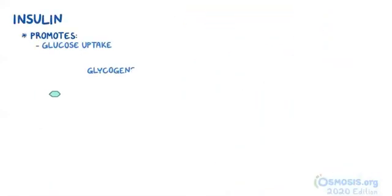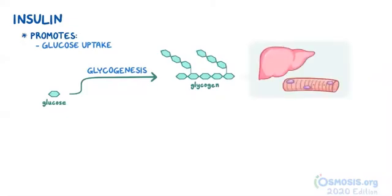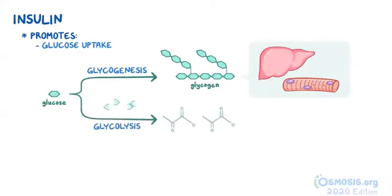As a result, insulin promotes glucose uptake and glycogenesis, which is the conversion of glucose to glycogen. Glycogenesis is the process that takes place in the liver and skeletal muscles. When glycogen storage capacity is reached, insulin promotes glycolysis, which is the breakdown of glucose to pyruvate.